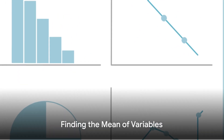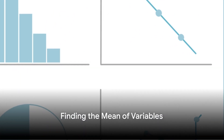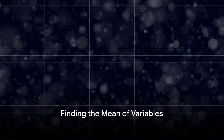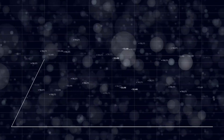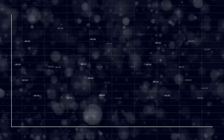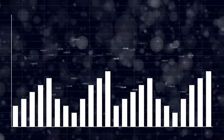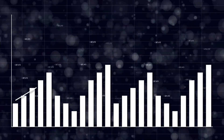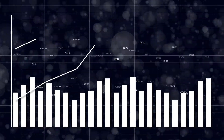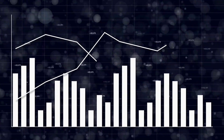First, we need to find the mean, or average, of both variables. Imagine you have a handful of marbles — the mean is the point where you'd balance them without any tipping over.